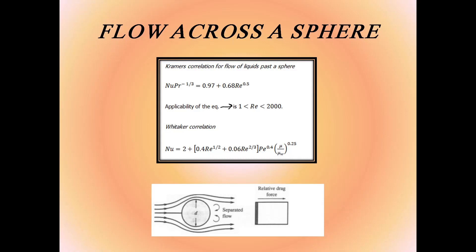For flow around a sphere, there is separated flow around upper and lower surfaces creating relative drag force. Kramers' correlation for liquids past a sphere: Nu × Pr^(-1/3) = 0.97 + 0.68 × √Re, applicable for Re from 1 to 2000. Whitaker's correlation can be used for the remaining range.